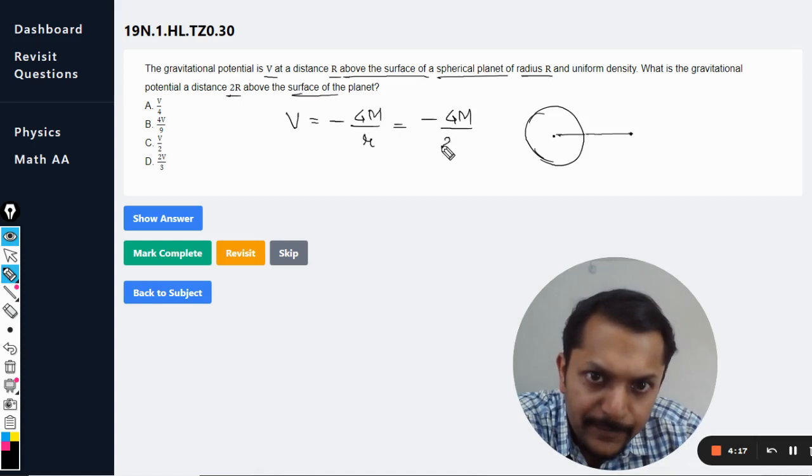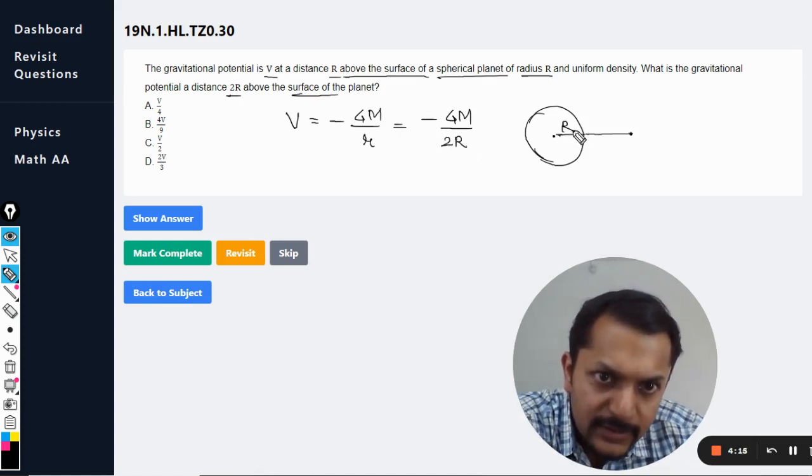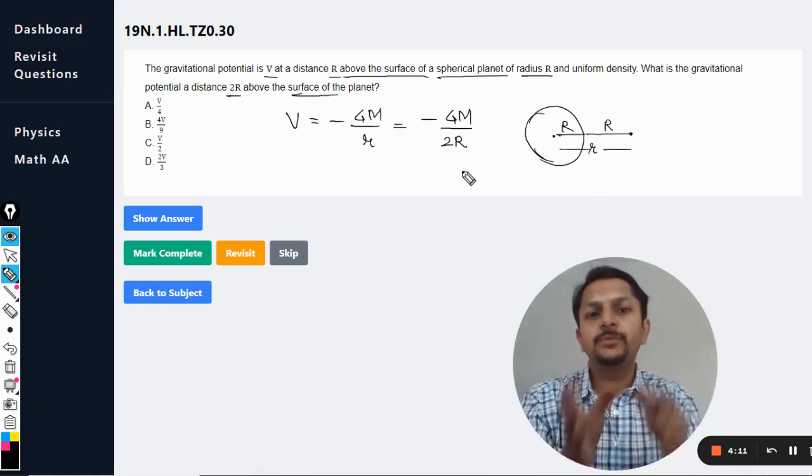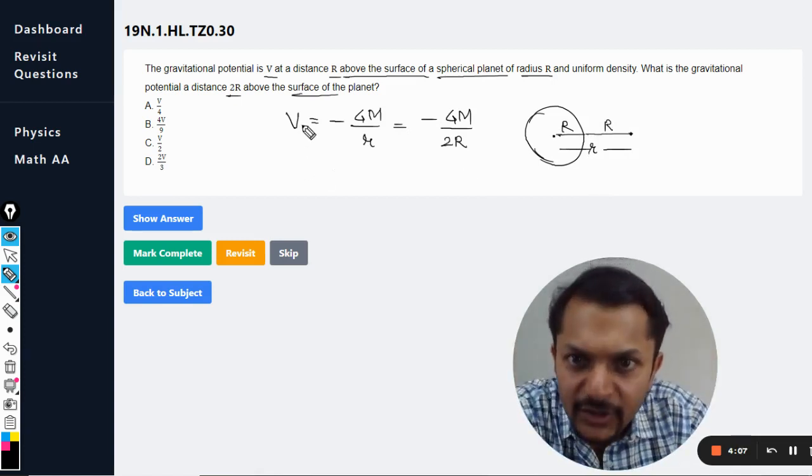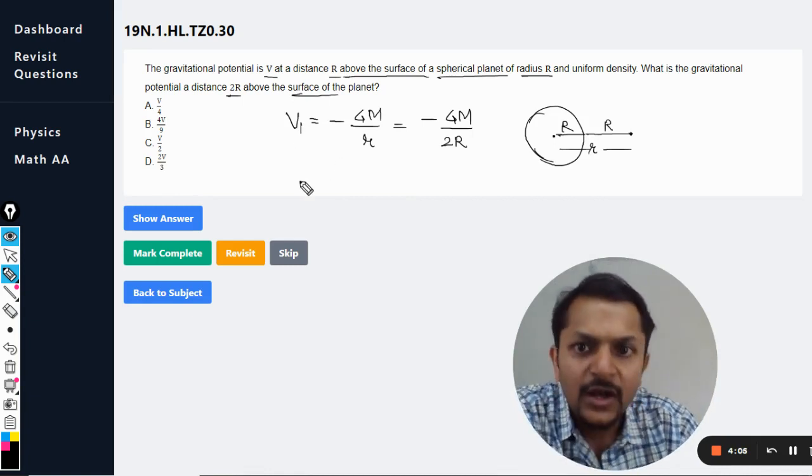Small r is the total distance of the point from the center of the earth, which is equal to 2R. So this is the potential I can call V1 or V initial.